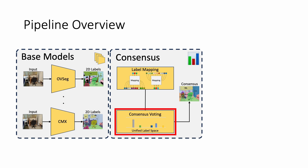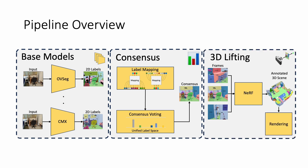Otherwise, the label is assumed to be unknown. Finally, the 2D consensus labels are lifted into 3D. This is motivated by the recent observation in neural radiance fields that shows that aggregating noisy 2D labels in 3D leads to an improvement in denoising. Further, representing the scene as a neural radiance field allows us to render arbitrary viewpoints from the scene.